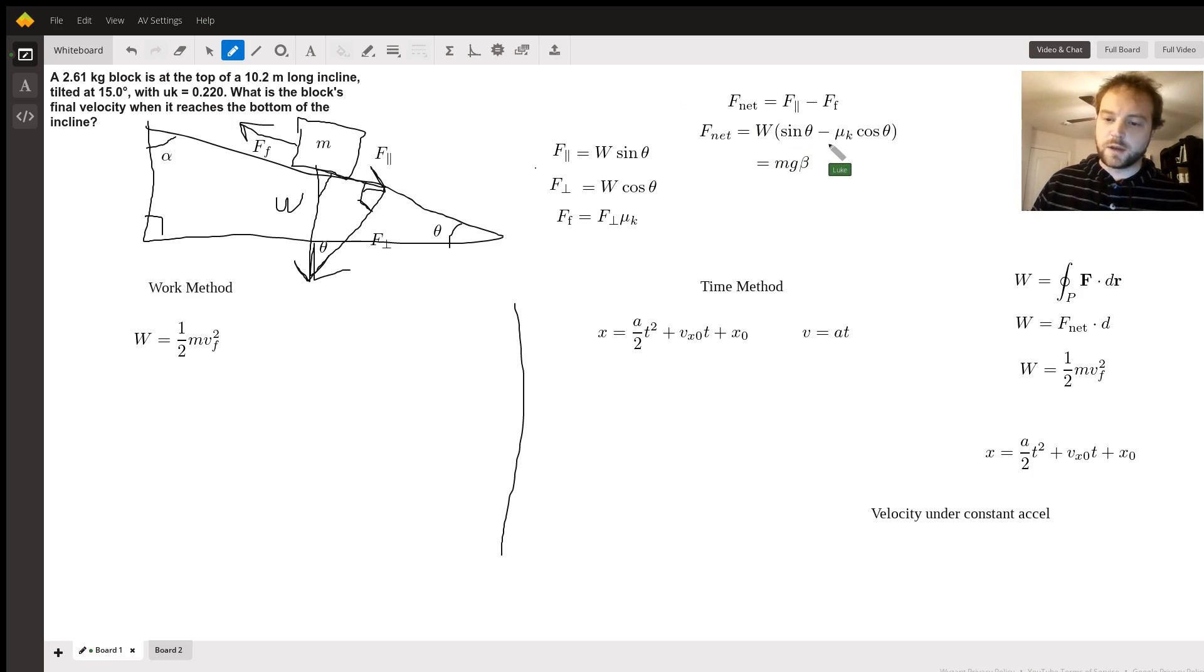So now for this expression we can plug these in. I factored out the W, so I have the net force being W times (sin(θ) - μ_k cos(θ)). That's just factoring out the W. And then I'm going to call this thing beta, so the net force is going to be W*beta or mg*beta.